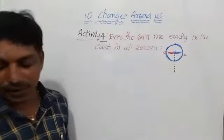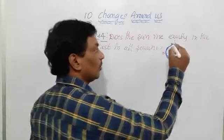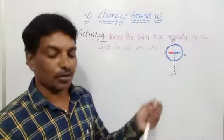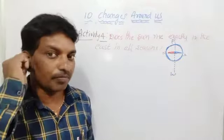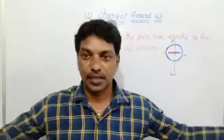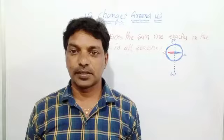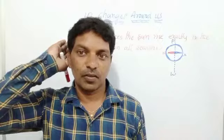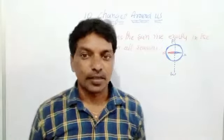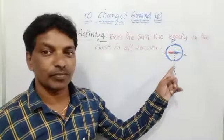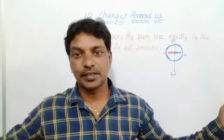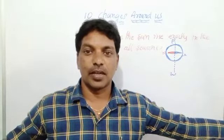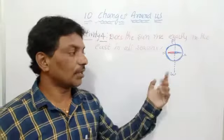So here we are going to know: this side is East and this side is West — perpendicular. Now we know the direction. For example, if we stand facing toward the Sun, that direction is East and the back side is West. Then our right side is North and our left side is South.